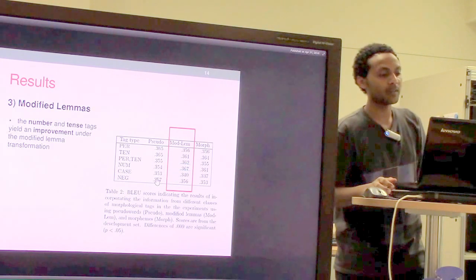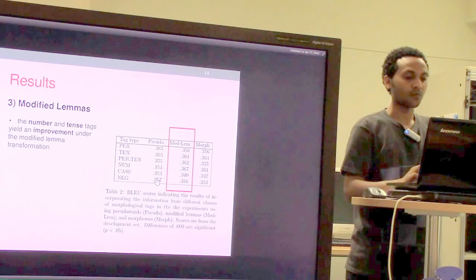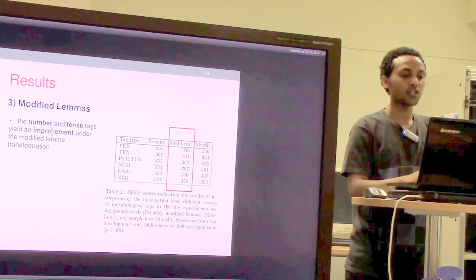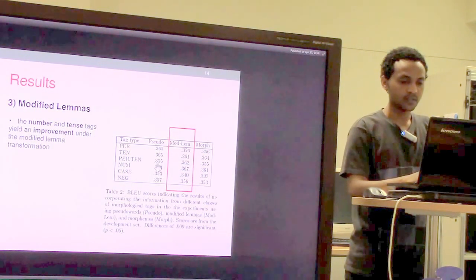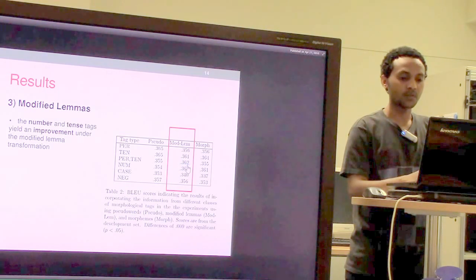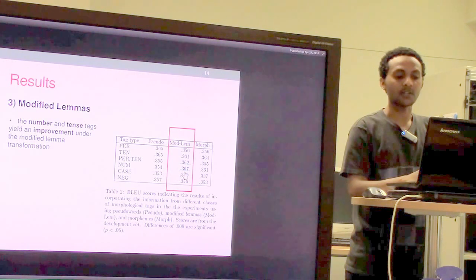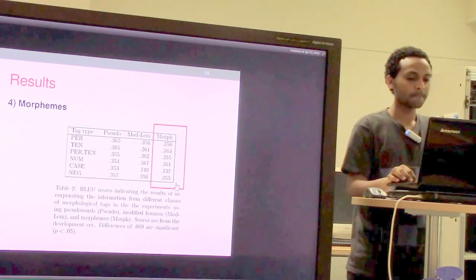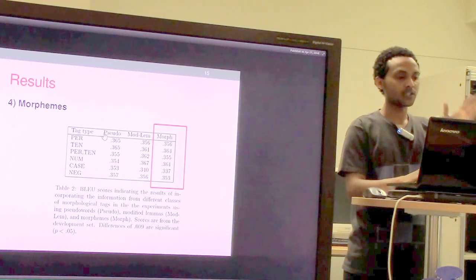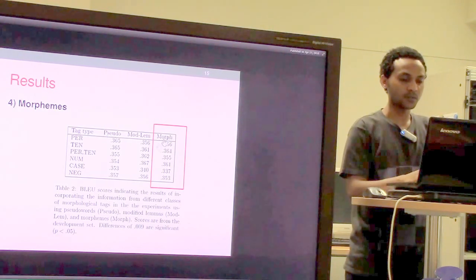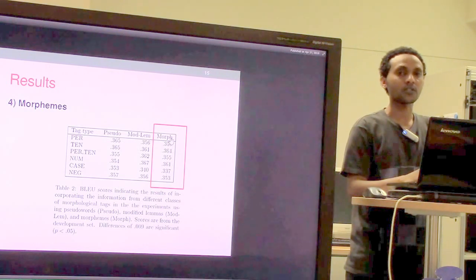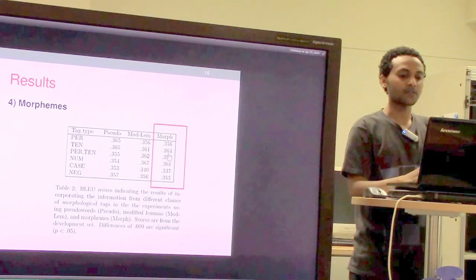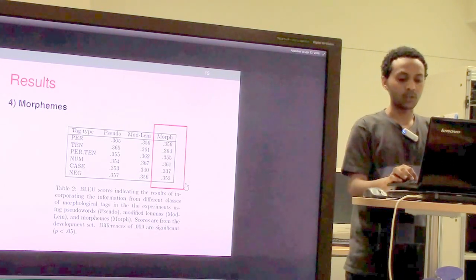The third method, modified lemmas, attaches pseudo words to the lemmas or words. Particularly for number and tense, this method showed improvement — 0.362 for person and tense, and 0.367 for number. For morpheme decomposition, when words are decomposed into morphemes, this method showed the lowest scores compared to the others, with the exception of tense where it scored 0.365 and 0.364, but otherwise failed to perform well.